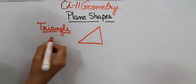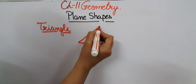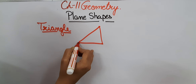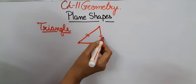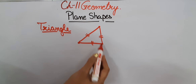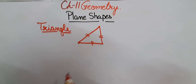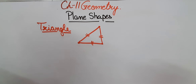Next is the triangle. A triangle has three vertices and three sides. So a triangle has three sides and three corners or vertices. The sides of the triangle may or may not be the same in length — that depends on the shape of the triangle.